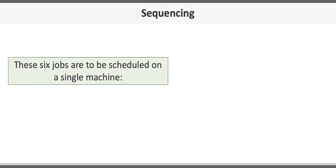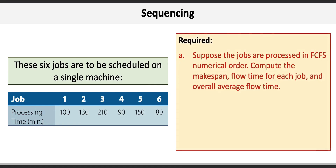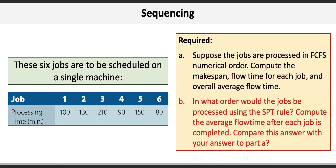Here's the basic information for our problem: six jobs are to be scheduled on a single machine, each with processing times ranging from 80 minutes to 210 minutes. In requirement A, supposing the jobs are processed using first-come-first-serve in numerical order, we compute the makespan, flow time for each job, and overall average flow time. Requirement B asks us to determine the order using the SPT rule and compute the average flow time.